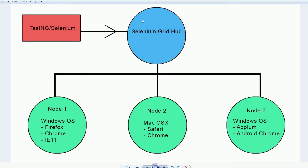So what is Selenium Grid? Selenium Grid is a service that you can put onto another computer where your tests can connect to, and then it'll distribute your tests along these other nodes that you can set up either on the same computer as the hub, or you can put on separate VMs or other computers that you have to run those tests.